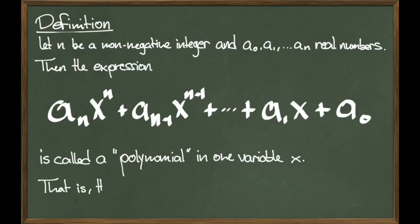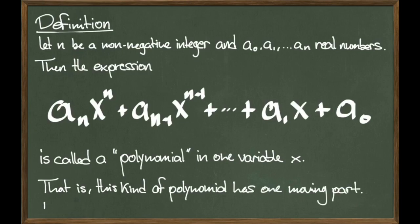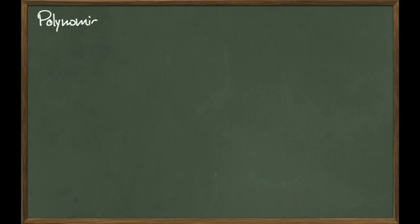The fact that this polynomial is in one variable means that it only has one moving part. Even though each X has a different power, it's all the same X. The accompanying a0, a1, up to an are called coefficients. We will be getting to some examples soon, but first we do need to discuss some polynomial anatomy.